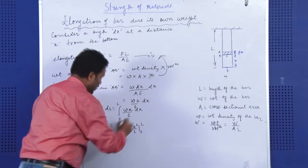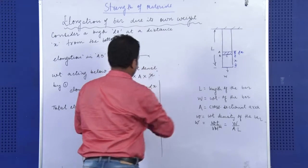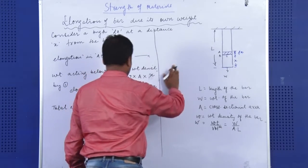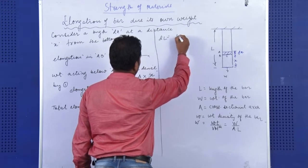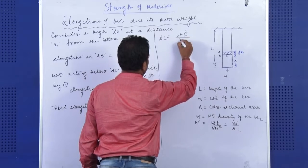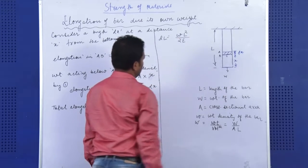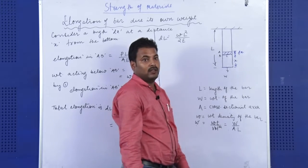So we can write DL is equal to WL square by 2E. Now, since this w was equal to W by AL.